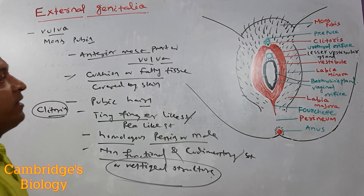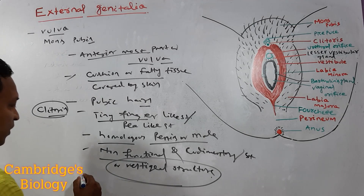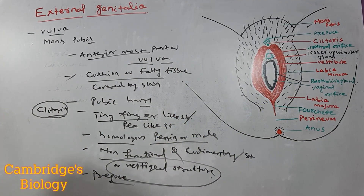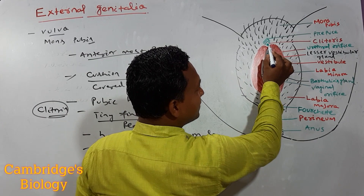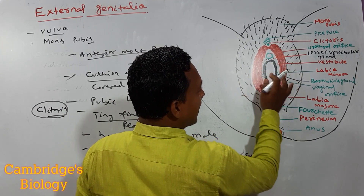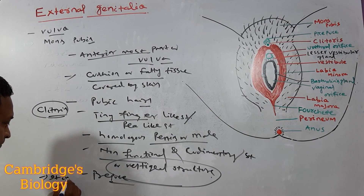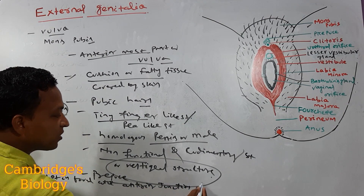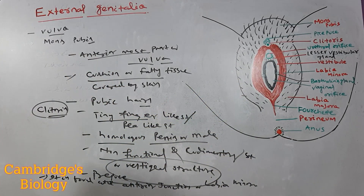The clitoris is covered by a fold of skin called prepuce. It is found at the anterior junction of the two labia minora.